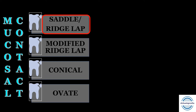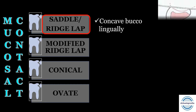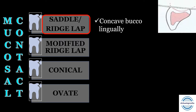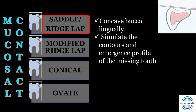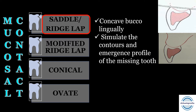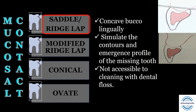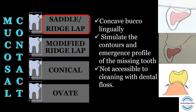The saddle or ridge lap pontic has a concave fitting surface and overlaps the residual ridge buccolingually. It tries to simulate the contour and emergence profile of the missing tooth because it overlaps on both sides of the residual ridge. However, the main problem is that it is not accessible to cleaning devices like dental floss, leading to plaque accumulation and tissue inflammation. Therefore it should be avoided.